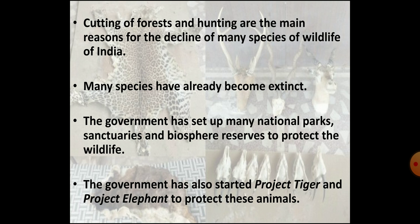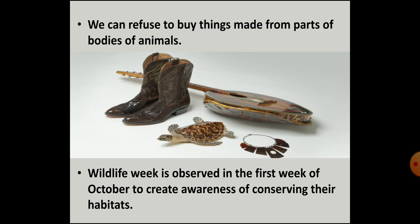Deforestation on a large scale has affected our wildlife directly. Hunting is responsible for many species of wildlife being on the verge of extinction, and a large number of animals are already extinct. To protect our wildlife, the government has created a number of national parks, wildlife sanctuaries and biosphere reserves. The government has also initiated many animal-specific projects such as Project Tiger launched in 1973 and Project Elephant launched in 1992. The common public can contribute to conserving wildlife by refusing to purchase items made from animal body parts. The first week of October is observed as Wildlife Week every year to develop awareness about protecting the natural habitats of the animal kingdom.